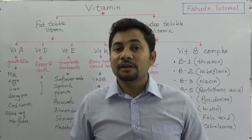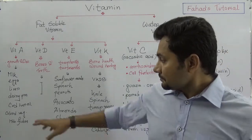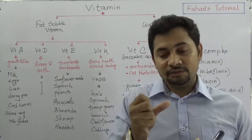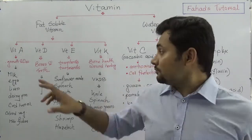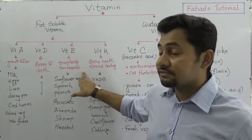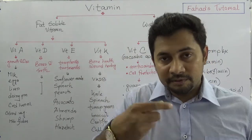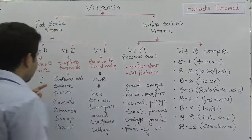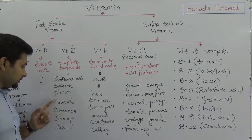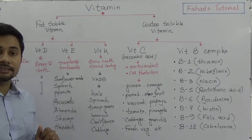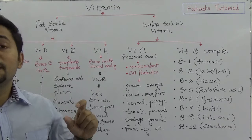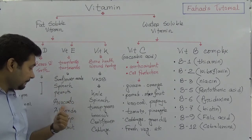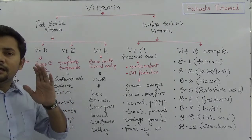Vitamin E is actually a group of eight types of components — four tocopherols and four tocotrienols. The food sources from which we can get vitamin E include sunflower seeds, spinach, peanuts, avocado, almonds, shrimp, and hazelnut.